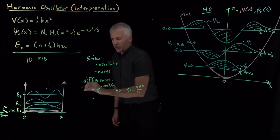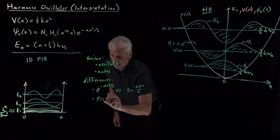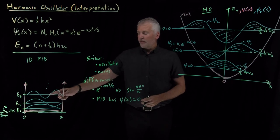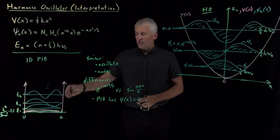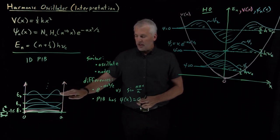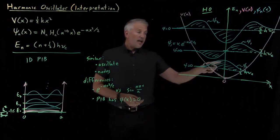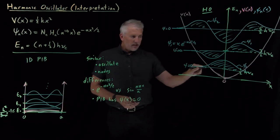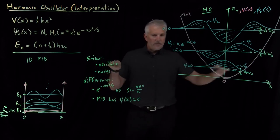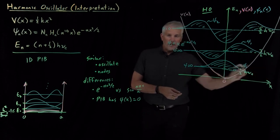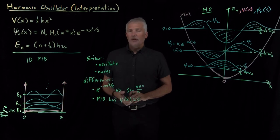Another difference is the boundary conditions. For the particle in a box, we spent quite a bit of time guaranteeing that the wave function reached zero at the edges of the box, because the potential energy was becoming infinite. That is clearly not happening for the harmonic oscillator — these Gaussian functions don't reach zero when they hit the potential energy wall. They asymptotically decay to zero very gradually and never quite reach zero until x reaches negative or positive infinity. That's an important difference: the harmonic oscillator can in principle have any amount of bond stretch or compression, while the particle in a box particle is not allowed to escape the box.